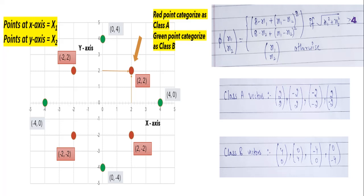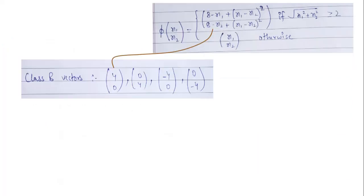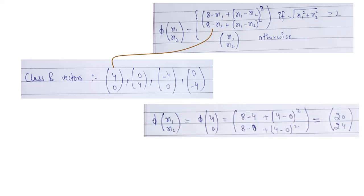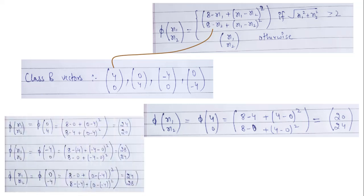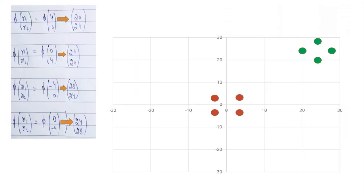Let's apply this function to Class B. First vector is 4, 0. If we substitute X1 as 4 and X2 as 0 in the function, then our phi will be 20, 24. We have transformed this vector from original vector 4, 0 to new vector position 20, 24. Similarly, we can transform each and every data point in Class B as shown on the screen. If we try to represent this on graph, we can find out the difference between vectors we had earlier and vectors we get after transformation.